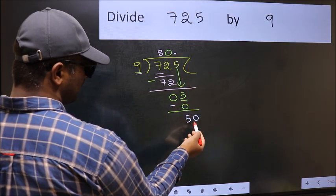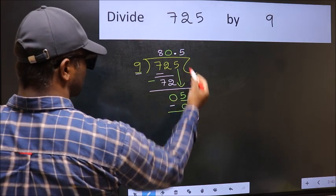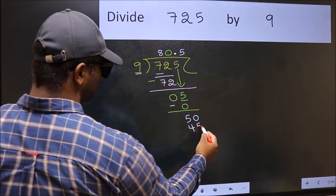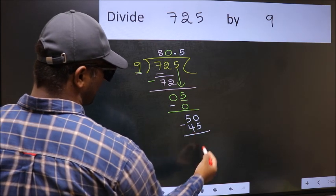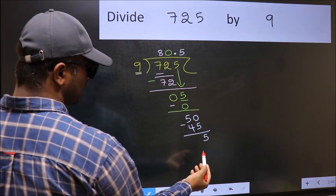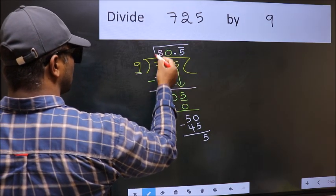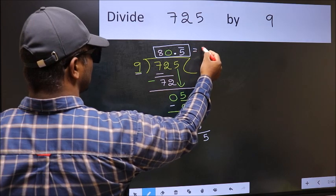So 50. A number close to 50 in 9 table is 9 times 5, which is 45. Now you should subtract, we get 5. We got 5 again. That means we get bar on this number. So this is our quotient.